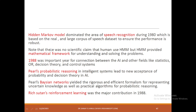Hidden Markov Models dominated speech recognition during the 1980s, based on large corpora of speech data to ensure robust performance, providing a mathematical framework to understand and solve the problem. During 1988, connections grew between AI and fields like statistics, operations research, decision theory and control theory. Pearl's probabilistic reasoning led to new acceptance of probability in AI. Bayesian networks yielded rigorous and efficient formalization for representing uncertain knowledge and practical algorithms for probabilistic reasoning. Rich Sutton's reinforcement learning was a major contribution in 1988.